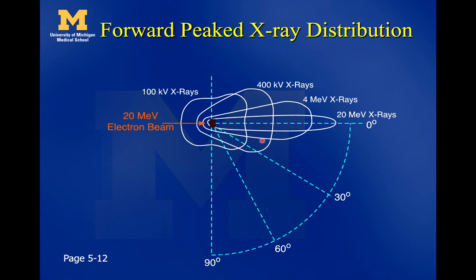This is basically how we get our unflattened beam in the linac. As the electron beam hits the target, the high-energy x-rays are mostly going forward, while the low-energy ones spread out more evenly. We end up with an unflat beam, and in the middle part of the x-ray beam we get more high-energy x-rays compared to other parts of the beam.